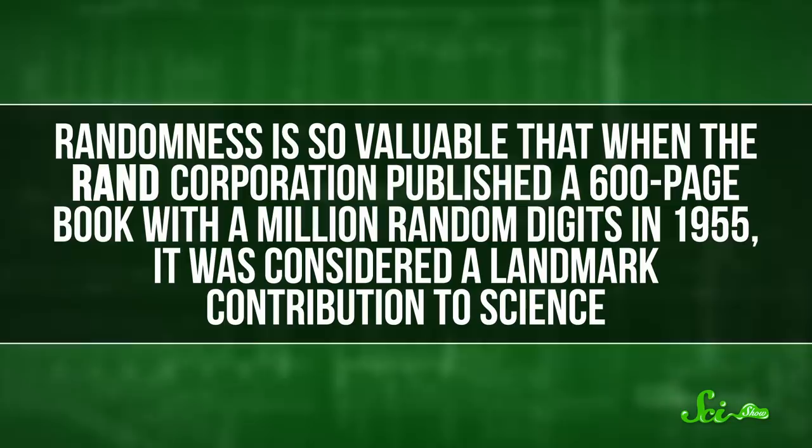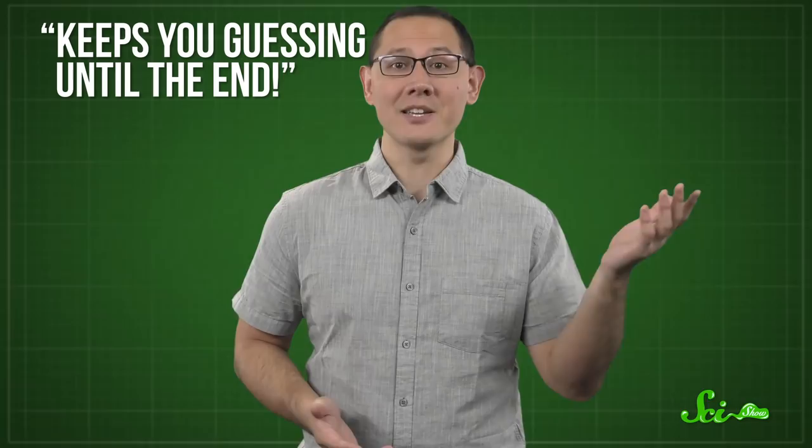Randomness is so valuable that when the Rand Corporation published a 600-page book with a million random digits in 1955, it was considered a landmark contribution to science. Now that computers have gotten faster, the Rand book is mostly useful as a source of hilarious Amazon reviews. But getting computers to generate numbers that are actually random is still much harder than you might think.